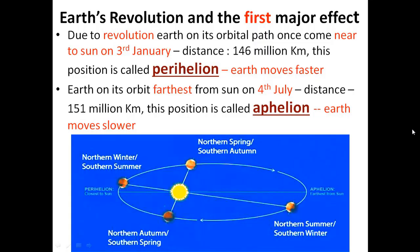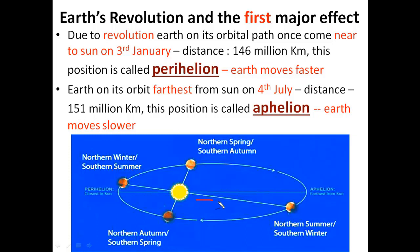Now we will understand earth's revolution and its first major effect. Due to revolution of the earth on its orbital path, once in a year earth is near to the sun, and this position is perihelion, on the 3rd of January. The distance from the sun would be 146 million km. At this point, when the earth is closer to the sun, the earth moves faster. Whereas when the earth is farther from the sun on its orbital path, this position is called aphelion, and the date is 4th of July. The distance is about 151 million km from the sun. On this orbital path, farther from the sun, earth moves slower.